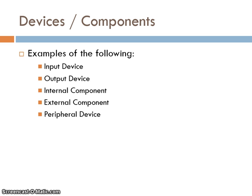There are different types of devices and components. A device or component is computer hardware — it is a physical or electrical component. Input devices are devices that provide data into the computer, such as a mouse, a keyboard, or a webcam. An output device is used to present data — this might be a monitor, whose more technical name is a VDU (visual display unit), or a printer.